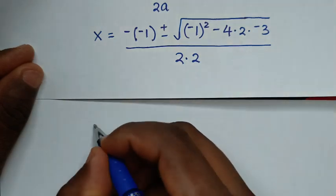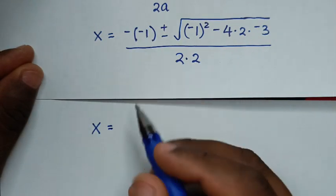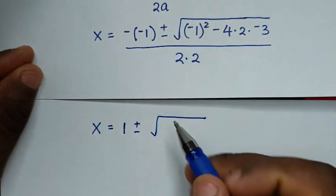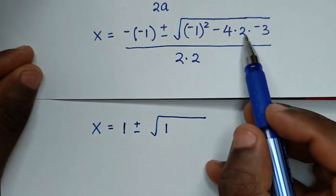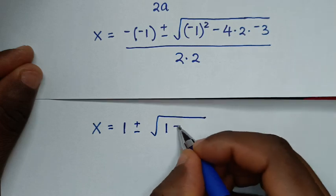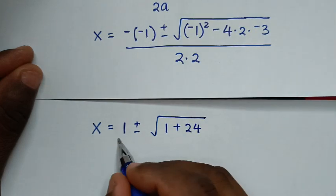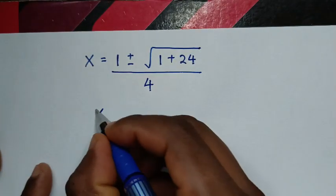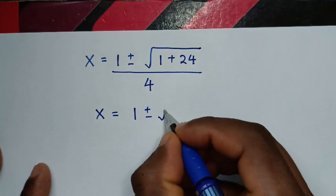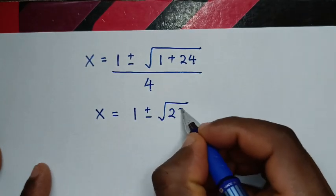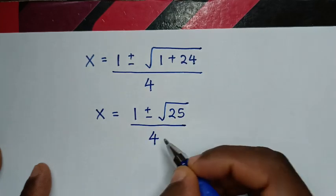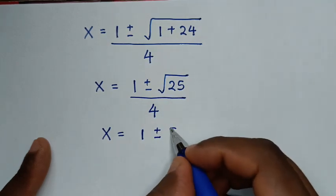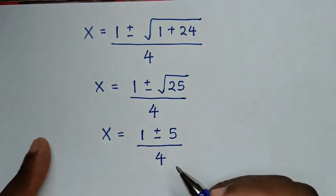Simplifying: negative of negative 1 is positive 1, negative 1 squared is positive 1, and negative 8 times negative 3 is positive 24. So x equals 1 plus or minus square root of 1 plus 24, over 4. That gives x equals 1 plus or minus square root of 25, over 4, and the square root of 25 is 5.